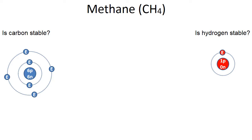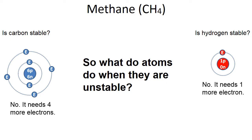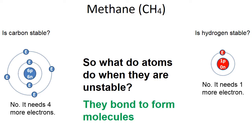Let's look at how these atoms bond together using a simple example — methane, CH4. Methane is made from carbon and hydrogen. Looking at carbon: is it stable? No — it only has four electrons in the second level and needs four more. Hydrogen with its one electron in the first level — is it stable? No, it needs one more electron because two electrons fill that first electron level. When atoms are unstable, they bond to form molecules.